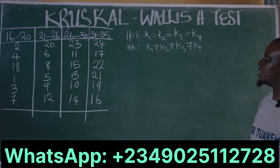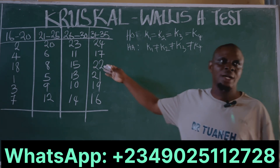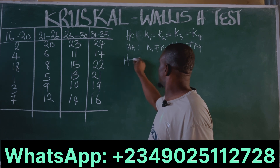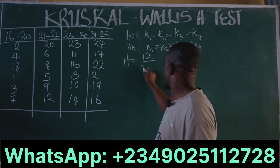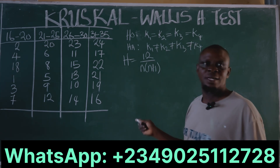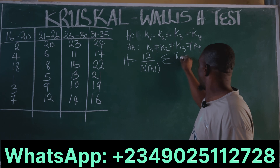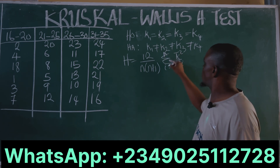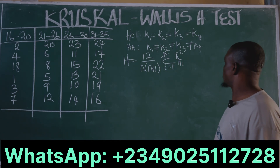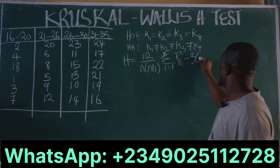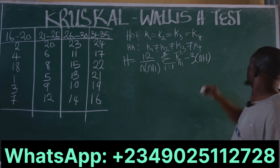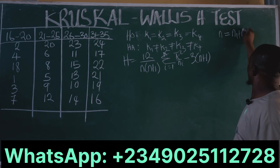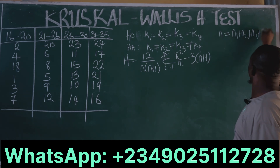Having stated the hypothesis, the next thing is to compute our test statistic. Our test statistic H is given by: H = [12 / (N(N+1))] × [summation of Ti² / Ni] for i from 1 to K, where K is the number of groups, minus 3(N+1). Our N is N1 + N2 + N3 + N4.